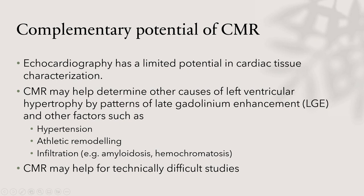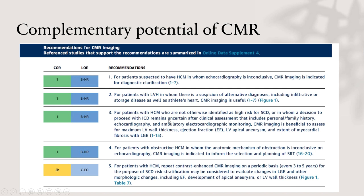Echocardiography has limited potential for cardiac tissue characterization. CMR may help determine the causes of hypertrophy through late gadolinium enhancement with contrast, which may indicate scarring. Depending on the pattern of scarring, it may suggest an alternative diagnosis to HCM, because in HCM there is the phenomenon of phenocopies — conditions that mimic HCM and must be differentiated from it using clinical history, imaging methods, and past medical history.